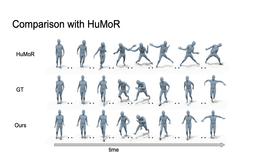Furthermore, we highlight the advantage of Pose NDF over HUMOR. HUMOR is a motion prior which takes the previous pose as input, so the change in pose accumulates over time and the denoised motion sequence deviates from ground truth observation significantly. While Pose NDF-based optimization resembles ground truth and also produces realistic motion.